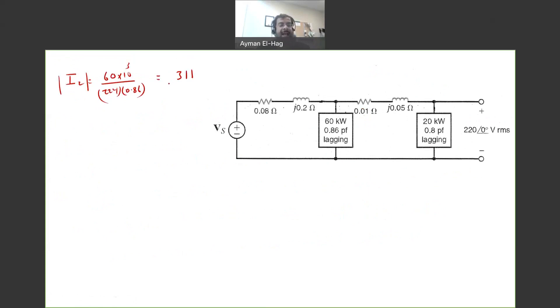Now we want to find the angle of the current. We have to be careful that this voltage now has an angle of 1, not an angle of 0, from our calculations. So theta V minus theta I would equal to the cosine inverse of 0.86, which is equal to 30.7. So your theta I would equal to 1 minus 30.7, which is equal to minus 29.7. From this, your I2 would equal to 311 angle of minus 29.7.